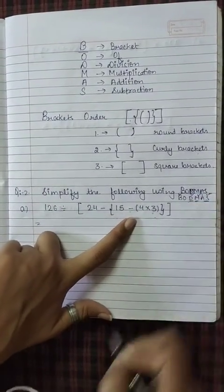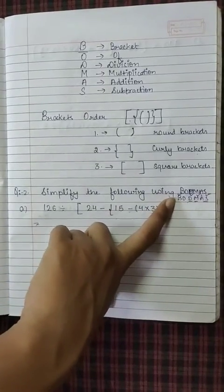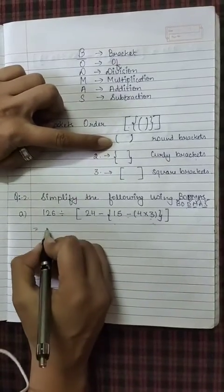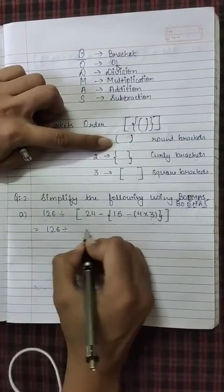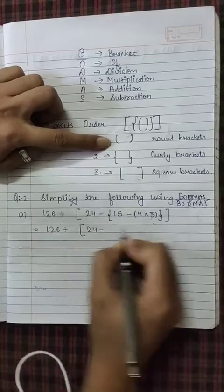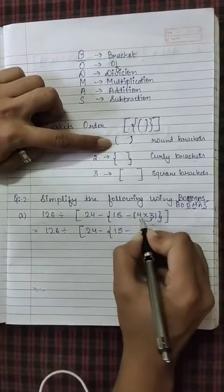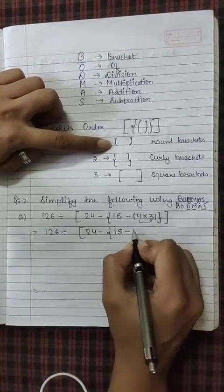And we have brackets. Means the first thing we have solved is round brackets. The second question is as it is. The first question we have solved is round brackets. So, 15 minus, now 4, 3's are what? 12.